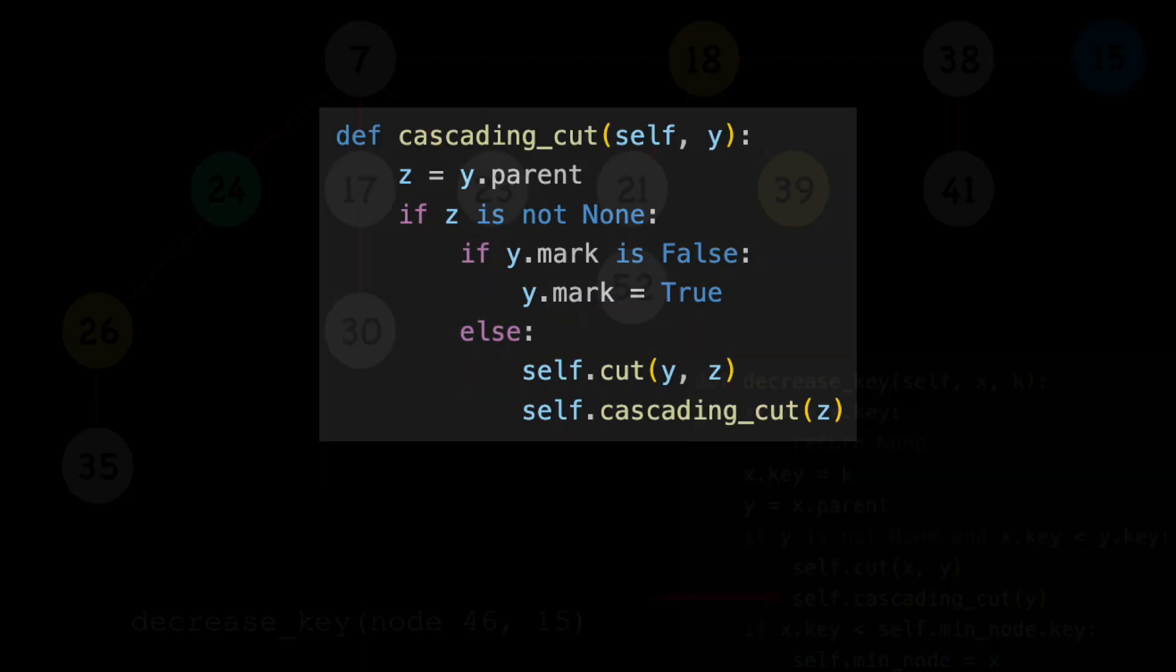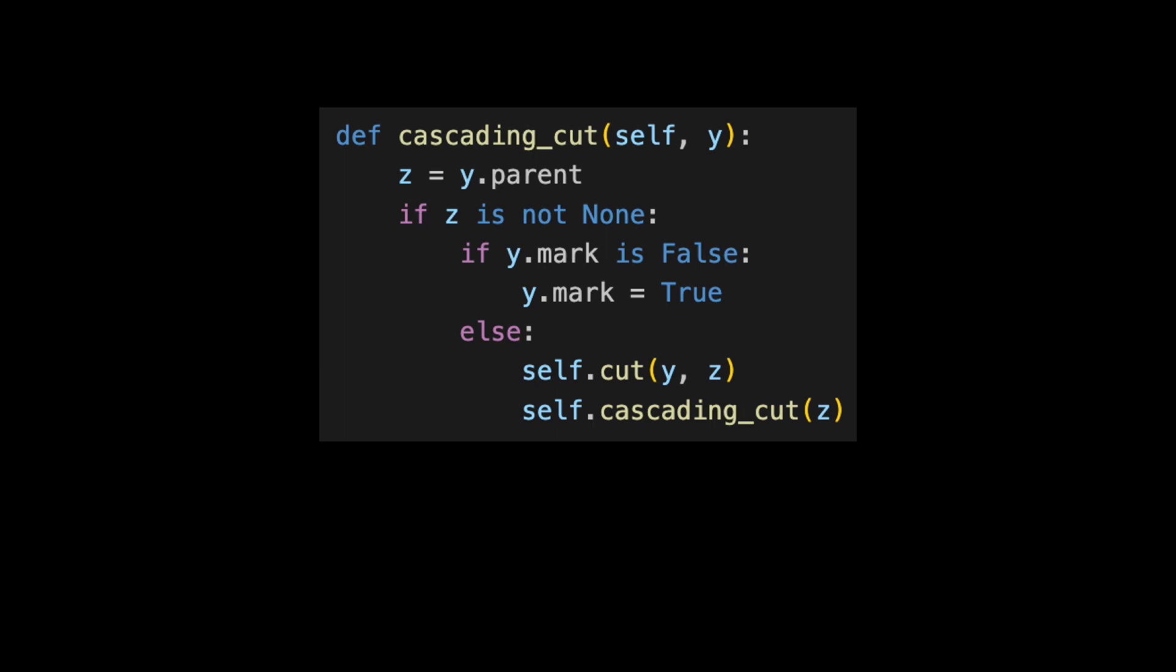Let's take a closer look. This method performs a cascading cut of X's parent, Y, and helps us obtain certain time bounds. In other words, the cut cascades all the way to the root list.